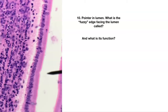Here's a close-up of that slide we just saw. Pointer is in the lumen. Here's kind of a fuzzy border — this edging right there facing the lumen. What is this called? What is this apical modification called right here, and what is its function? You don't need to tell me the type of epithelium — just what is this apical modification called, this fuzzy-looking thing, and what is its function?